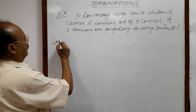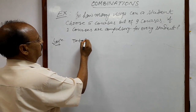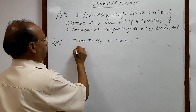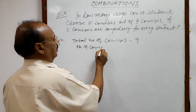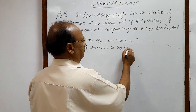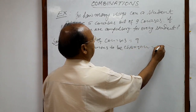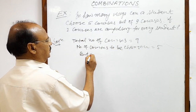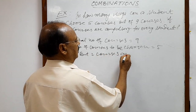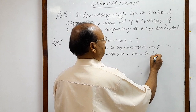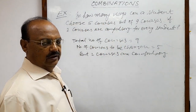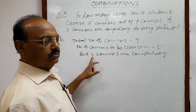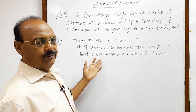Let us see how we can solve this problem. Total number of courses is nine, and the number of courses to be chosen is five. Among these five, two courses are compulsory. So in real sense, a student has to choose five minus two courses, since those two must be taken compulsorily.